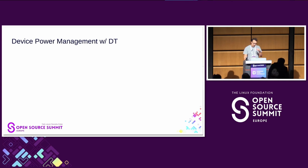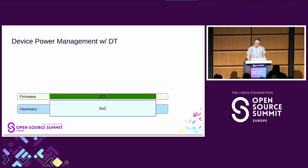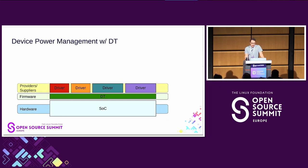In device power management with DT, we have the SOC — the underlying hardware layer. Then we have this really thin layer of DT, which is the firmware — it just describes how things work, basically a database. Then we have providers that provide power management features: provider drivers, clock drivers, reset drivers, etc. Those things communicate through DT as an interface database — they just know that they have to talk over DT to talk to the hardware.